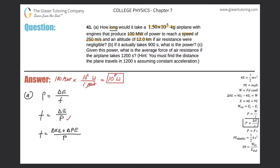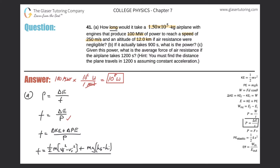From here I'll expand on these terms. The change in kinetic energy is one-half times mass times (v_final² − v_initial²), plus the change in potential energy, which is mass times gravity times (h_final − h_initial). All of that divided by power.